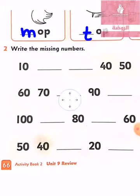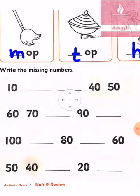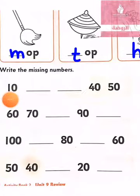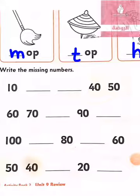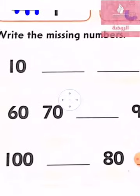Now we will go to the next exercise: write the missing number. We will write from the smallest number to the biggest number. Who can tell me what's the first number? Very good, it's number 10. Now we will write the number after 10, which is number 20. Very good, it's number 20.